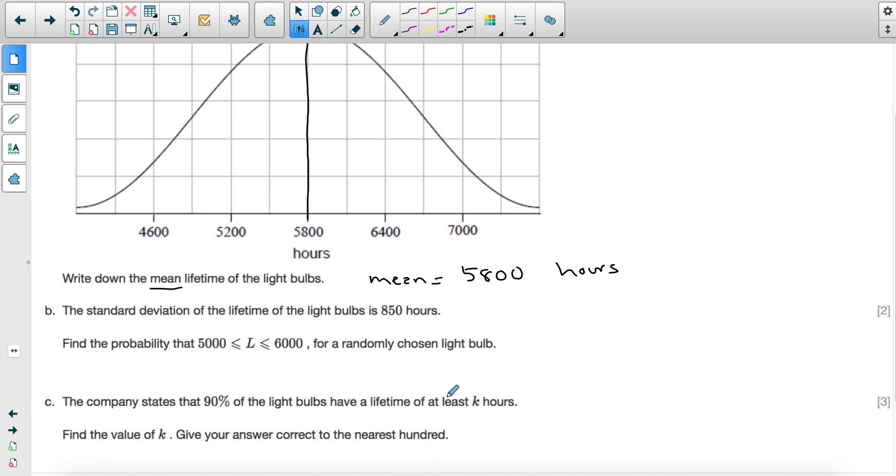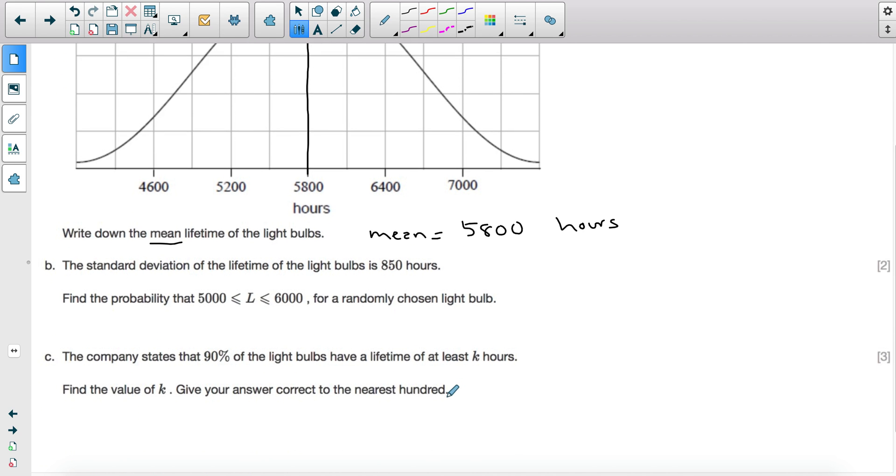As for part B, it tells you that the standard deviation is 850 hours. Find the probability that the lifetime in hours is greater than or equal to 5,000 and less than or equal to 6,000. Now writing this in this form means that you need to find the area or the probability between two intervals. So you don't have a lower bound of infinity or an upper bound of infinity. So for these questions, it's always a good idea to sketch. Sometimes you do get method marks for sketching. So always, always sketch.